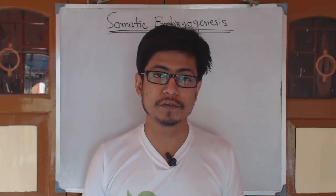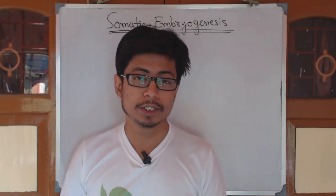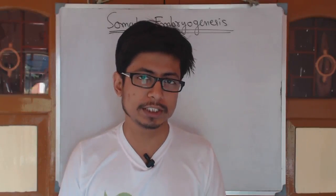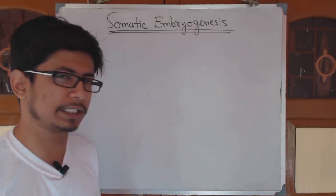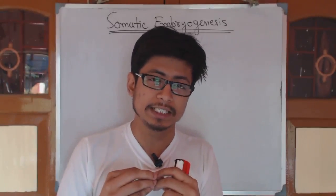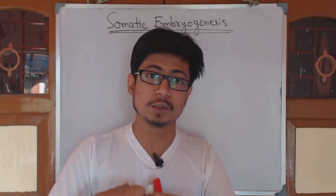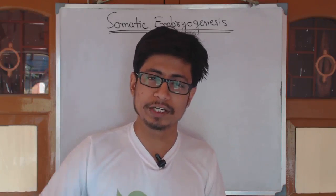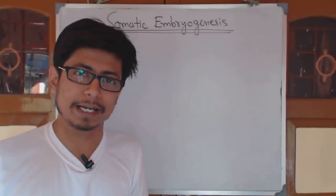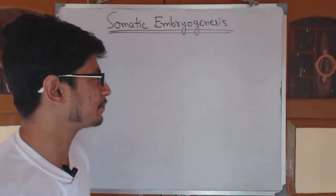Welcome back, friends, to another video from Shomo's Biology. In this video tutorial we'll be talking about somatic embryogenesis. You probably heard the term embryogenesis earlier — it means the development of an embryo after the fusion of two gametes. That fusion forms a diploid nucleus-containing cell known as a zygote, and the zygote divides to produce an embryo, which grows into a mature organism. That's the conventional plan of embryogenesis.